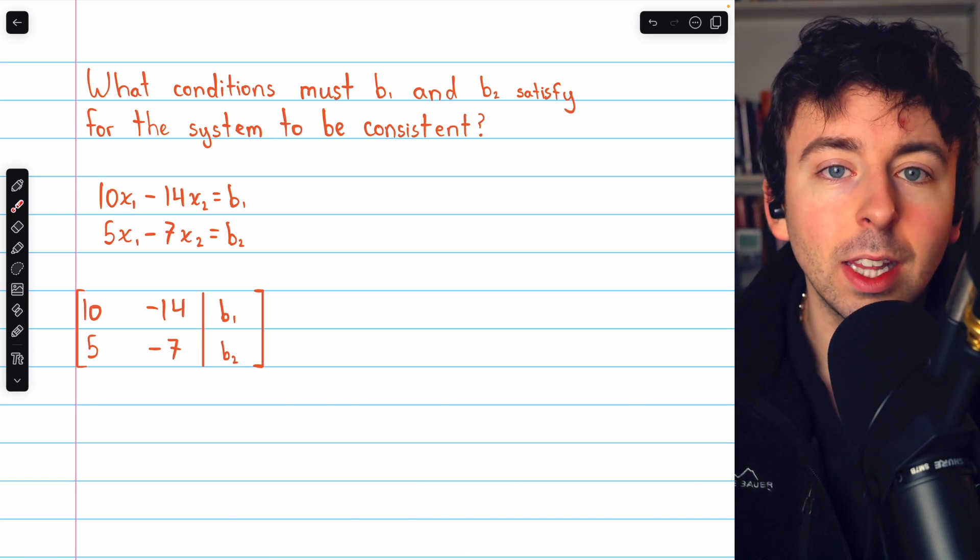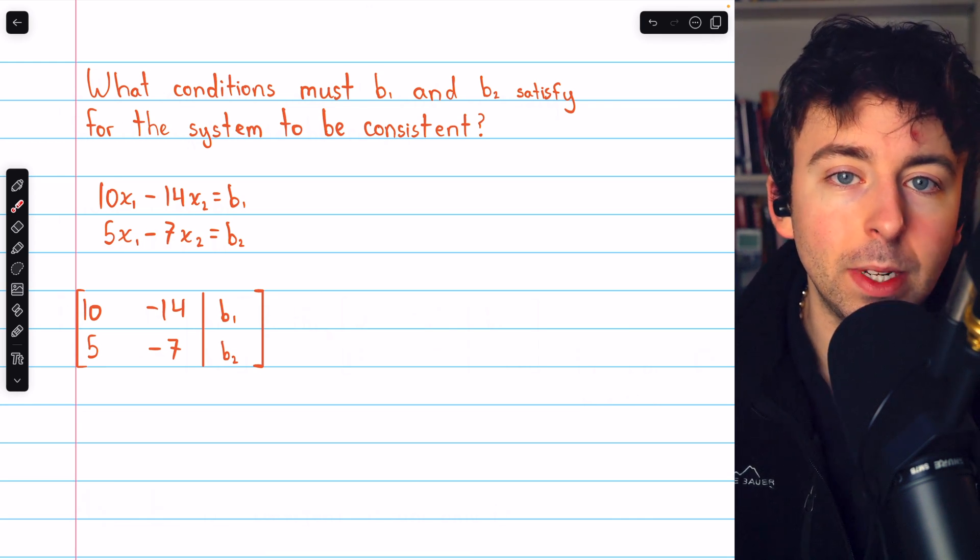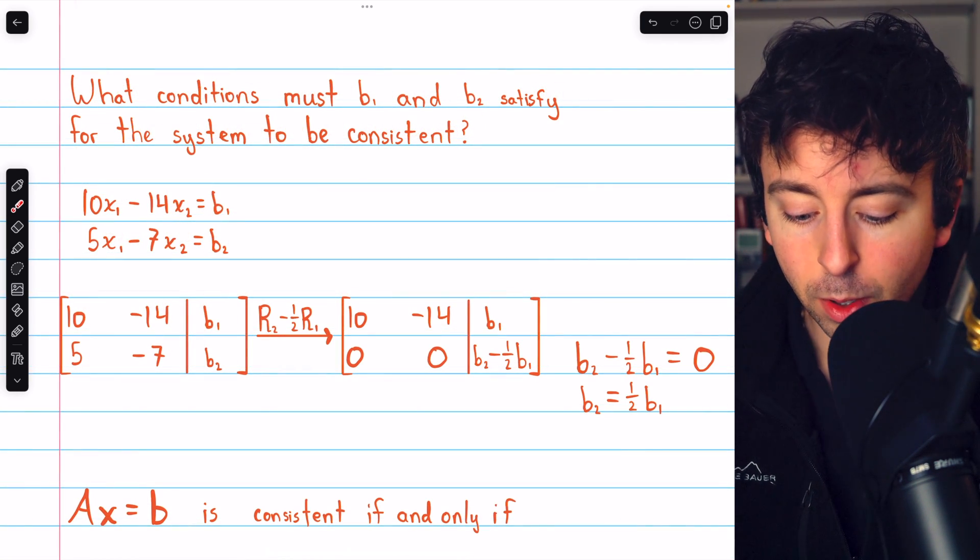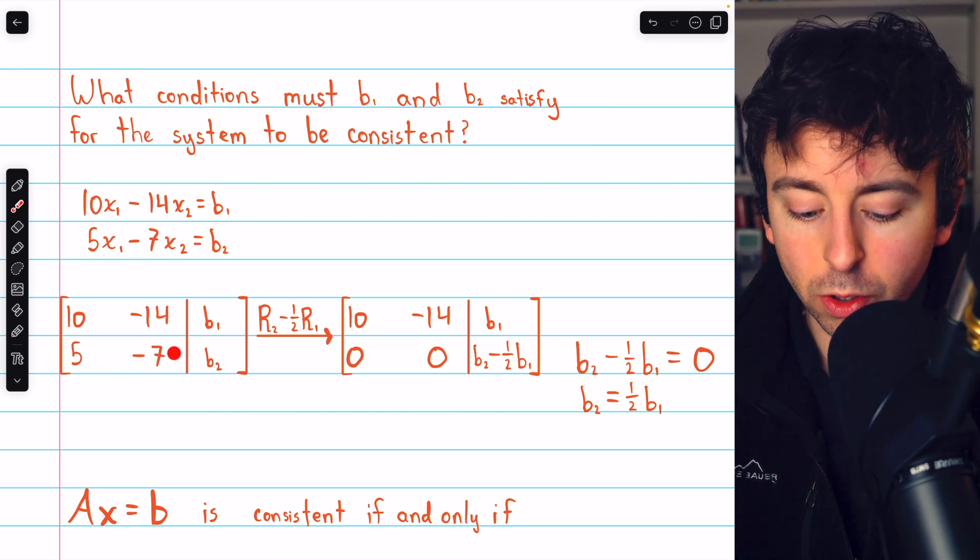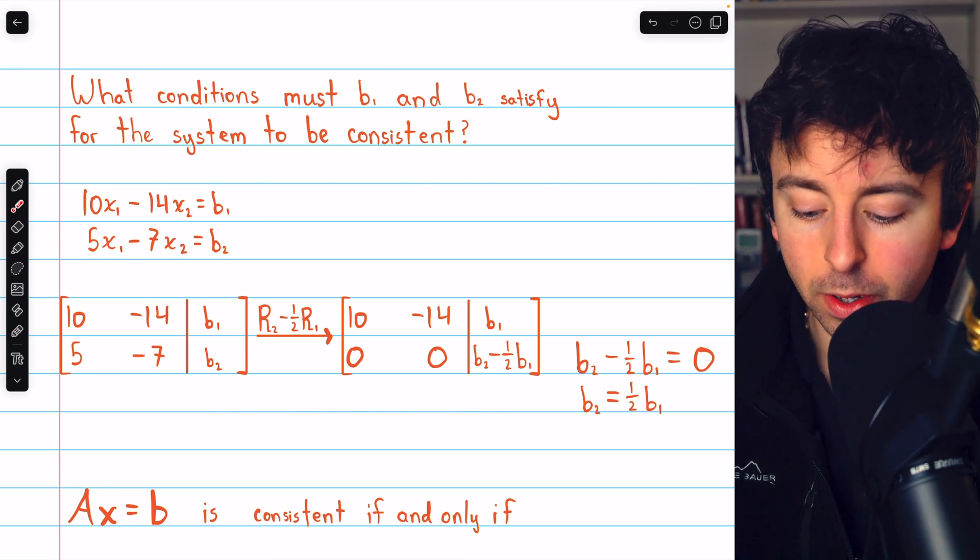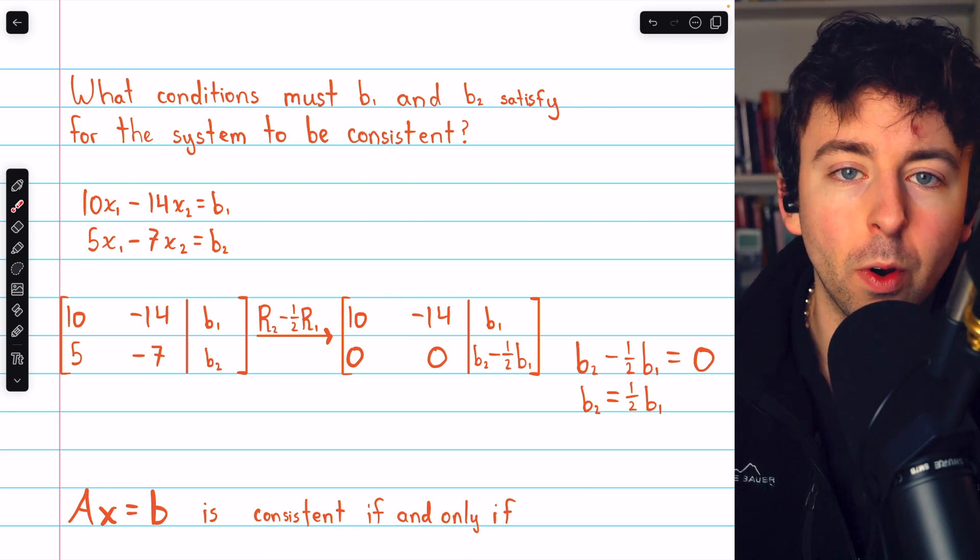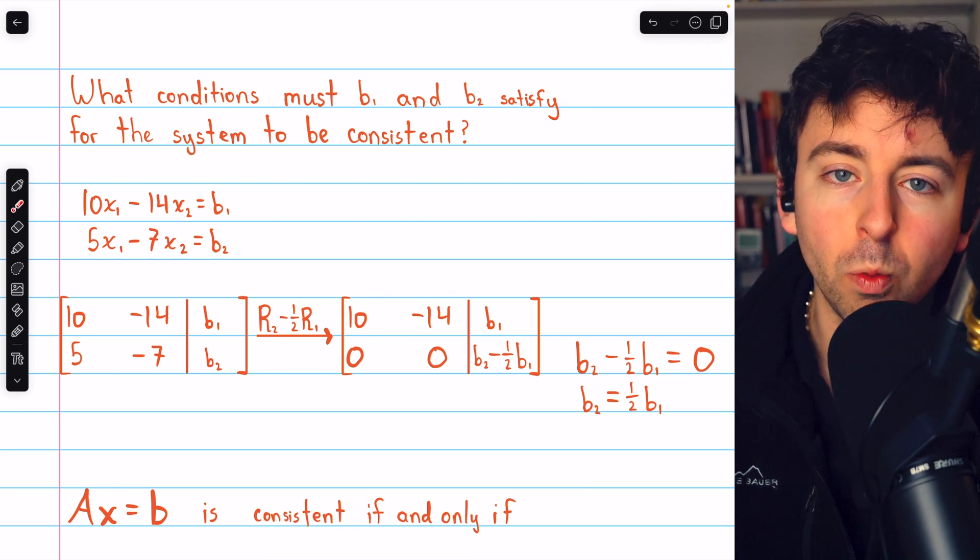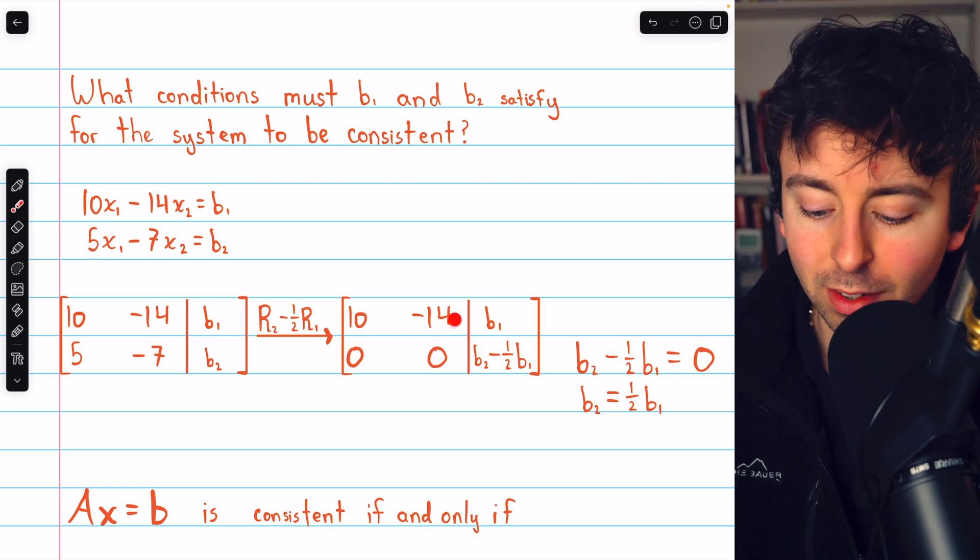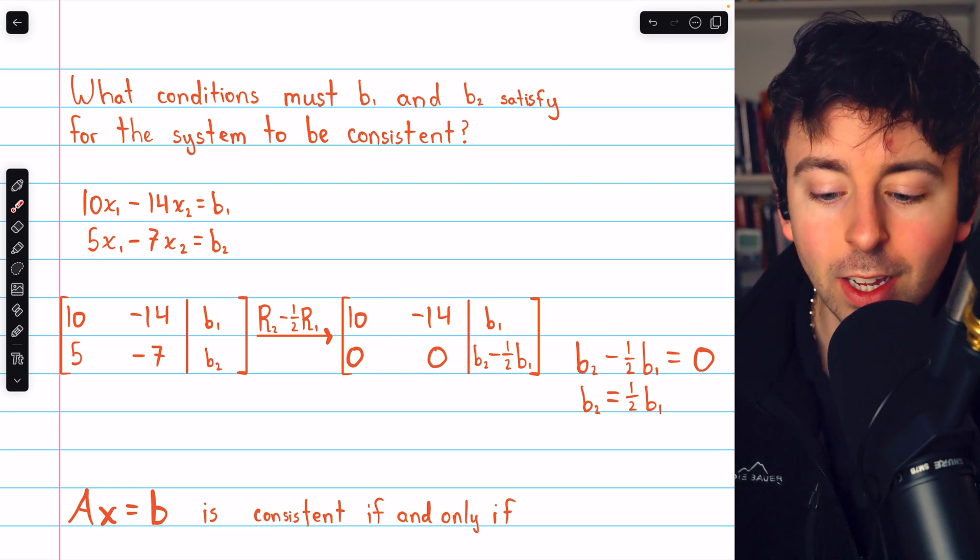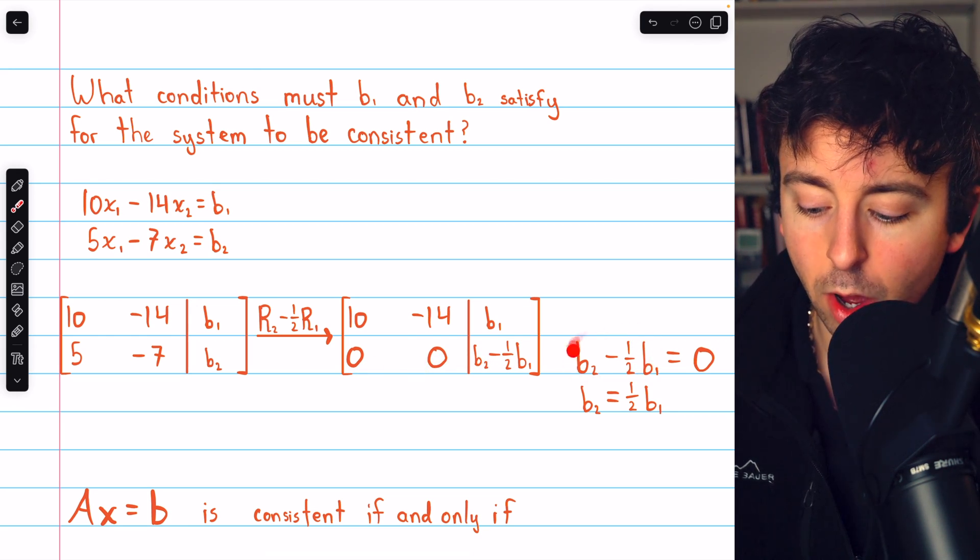Then, we can simply perform Gaussian elimination to determine what constraints, if any, are on b1 and b2. This is a quick and easy example. We just have to subtract 1 half row 1 from row 2 to get this to be 0, 0. At this point, this isn't quite in row echelon form. We'd have to multiply row 1 by 1 over 10 to get this to be a leading 1. However, this is sufficient to answer our question. We see that row 2 places this restriction on b1 and b2.